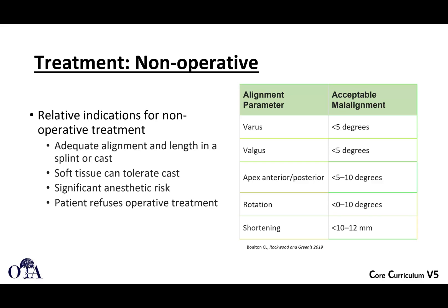For non-operative management, relative indications include adequate alignment and length maintainable in a splint or cast, and soft tissues that can tolerate a cast — meaning you don't want a severe soft tissue injury or blisters requiring wound care. Other indications include a patient who is particularly high risk for surgery due to medical comorbidities, or a patient who refuses operative management. Acceptable alignment parameters are: five degrees of varus or valgus, five to ten degrees apex anterior-posterior angulation, zero to ten degrees of rotation, and generally less than one centimeter of shortening.